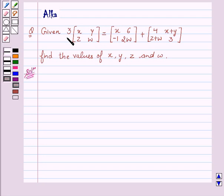Our given question is: given 3 times the matrix [x, y; z, w] equals the matrix [x, 6; -1, 2w] plus the matrix [4, x+y; z+w, 3]. We have to find the values of x, y, z, and w.